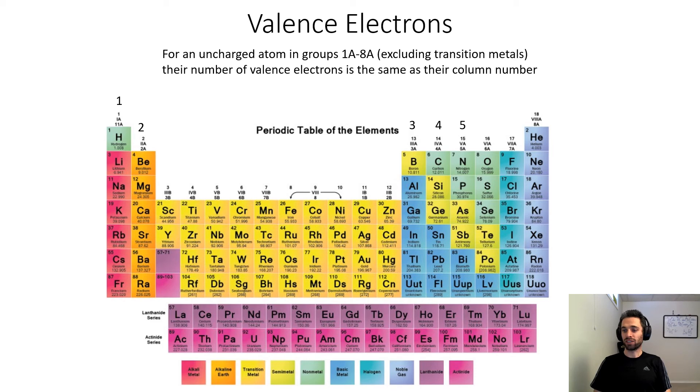Nitrogen, phosphorus, arsenic. These all have five valence electrons. Phosphorus, for example, would have five valence electrons and ten core electrons.